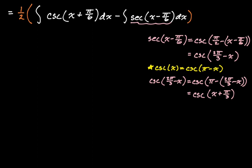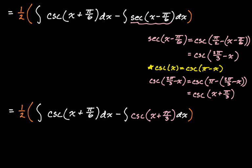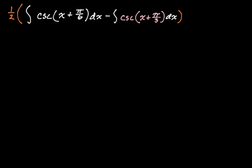We've reached the final form before integrating. We have one half times the integral of cosecant of x plus pi over six, minus cosecant of x plus pi over three, dx. If you know what to do with this, that's fantastic. If not, I'm going to show you how to get one form of the integral of cosecant. It's not the form you're probably familiar with — you might know the antiderivative of cosecant of x is negative natural log absolute value of cosecant x plus cotangent x plus C — but looking at the answer choices, that's not really going to help here.